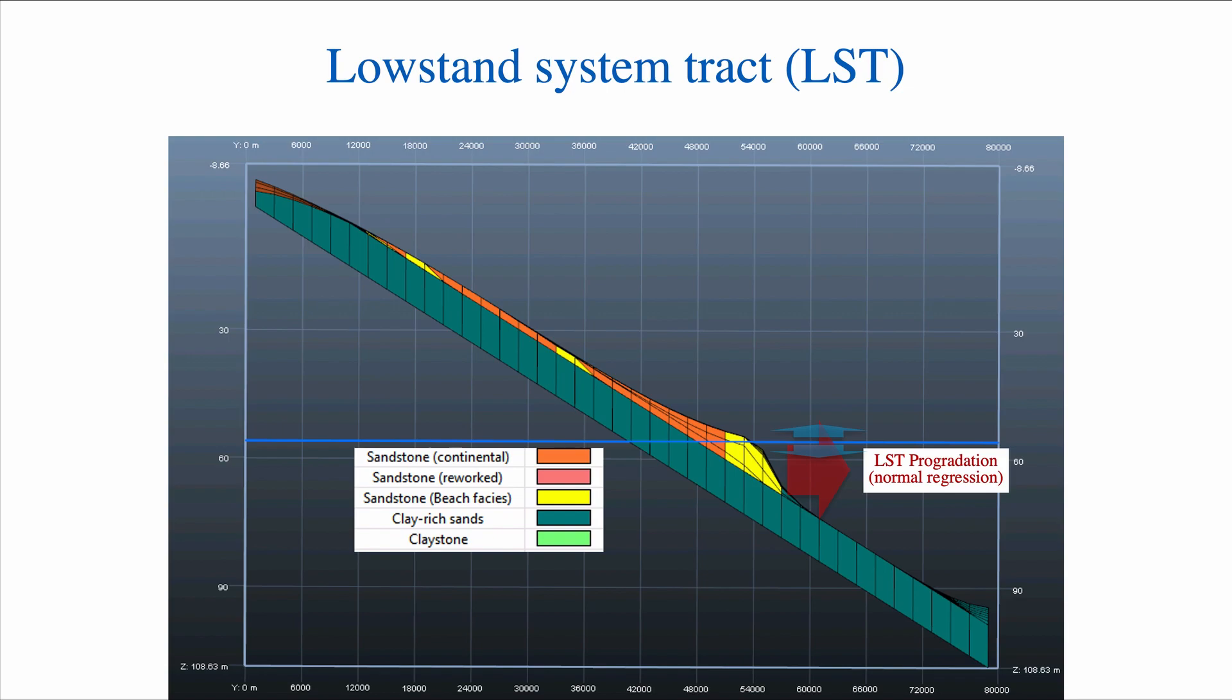Remember your accommodation equation: the only thing that can happen to those sands, because base level is not rising so we don't create accommodation, is that those sands need to prograde. So during the LST we have progradation, but it's a very different progradation than the FSST progradation—it's a normal regression.